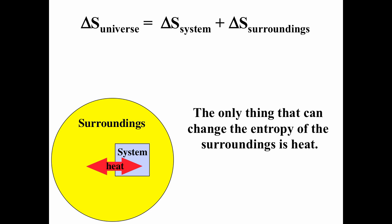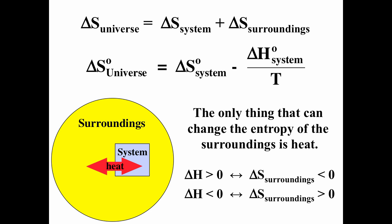Because the only thing that can affect the surroundings is heat and work, the change in entropy of the surroundings is equal to minus delta H over T. Remember, delta H is change in enthalpy; it's equal to Q under constant pressure and only expansion work. Q is positive when heat is going to the system, so negative Q is the heat going to the surroundings. If you add heat to something, its entropy increases. So the change in entropy of the universe equals the change in entropy of the system minus the change in enthalpy of the system over temperature.